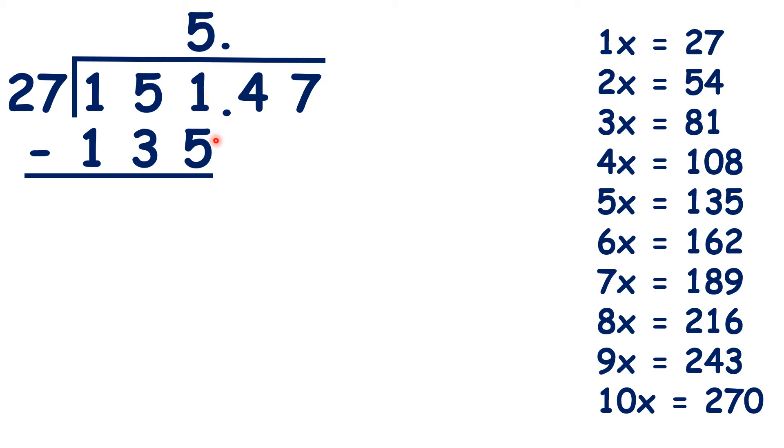151 minus 135 is 16, and we can bring down the 4, so we have 164 divided by 27. We can see that 6 times 27 is 162, so let's write 162 below 164, and 6 in our answer.